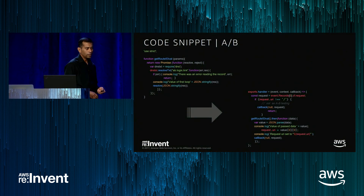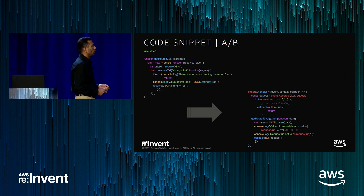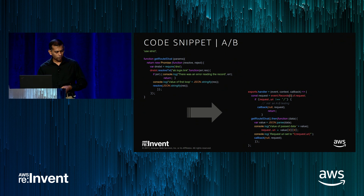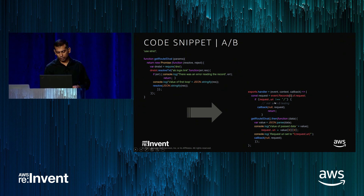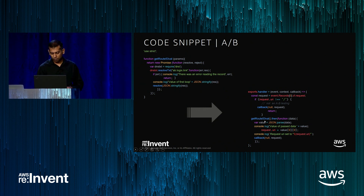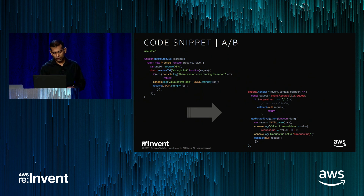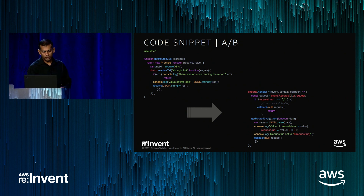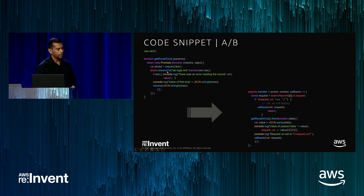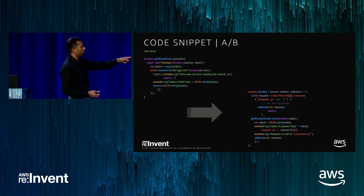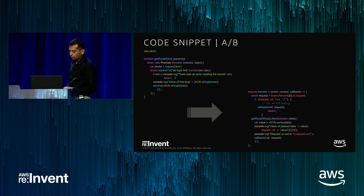Looking at the code for A/B routing: the initial handler gets the request URI and calls the Route 53 function. The Route 53 function queries the DNS — in this example, AB.logics.link — and gets the text record using resolve.text from DNS. Once it gets the value, it parses it and sets the request URI to value zero. Whatever you pass in the DNS record set is what gets used as the path. This is essentially the same principle as multipath routing but using Route 53 DNS text records to dynamically control which version is served.